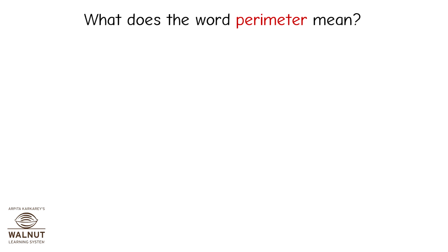What does the word perimeter mean? Perimeter is the distance around a shape.